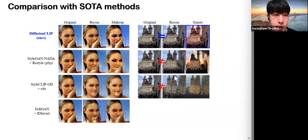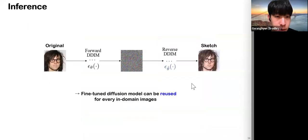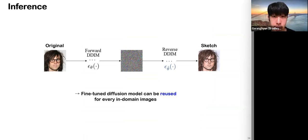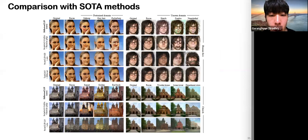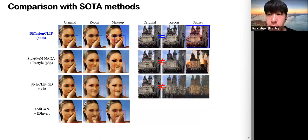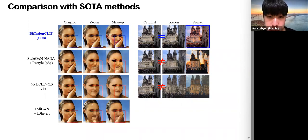Once the diffusion model is fine-tuned, any image from the pre-trained domain can be manipulated through forward DDIM with original pre-trained models, followed by reverse DDIM with fine-tuned diffusion models. Qualitatively, our method shows outperforming results compared to state-of-the-art GAN-inversion-based baselines. GAN-inversion methods fail to manipulate face images with novel poses, producing distorted results. In the case of church images, manipulation results can be recognized as results from different buildings. Our reconstruction results are almost perfect, even with fine details and background, which enables faithful manipulation.